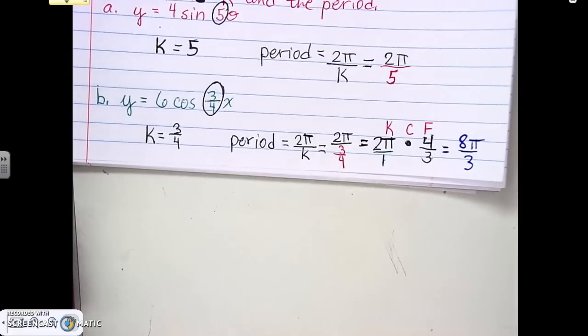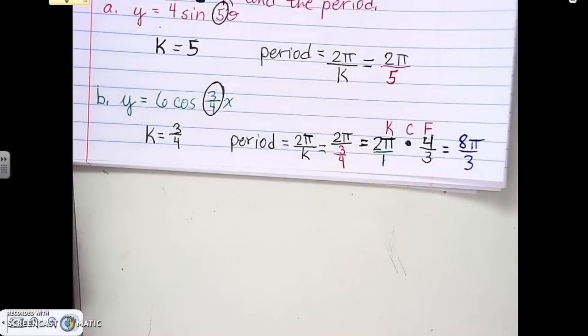So with this, that's all you have to do when it comes to finding your period — figure out what K is, and then do 2π divided by K.